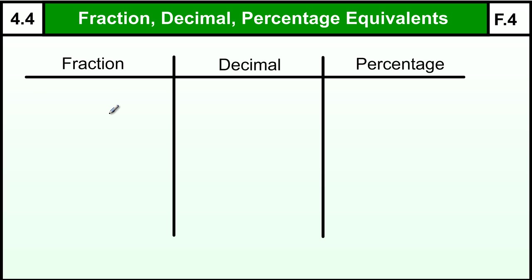Fractions, decimals, and percentages are equivalent. An obvious example of that would be a half. This is the most common one we use. A half, we should know, as a decimal is 0.5 and as a percentage is 50%. They are all the same thing.